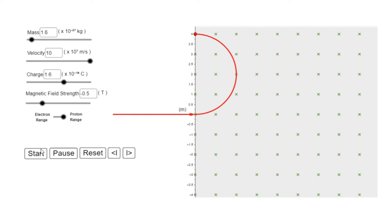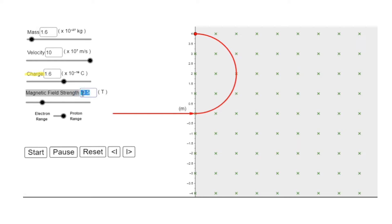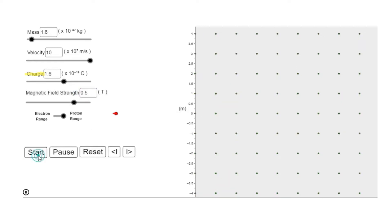Let's investigate the effect of direction and strength of magnetic field on the deflection. We go back to the positive charge particle with a charge of +1.6×10⁻¹⁹ coulombs. Then we change the direction of the magnetic field to out of the page. As you can see, the deflection will now be going down.